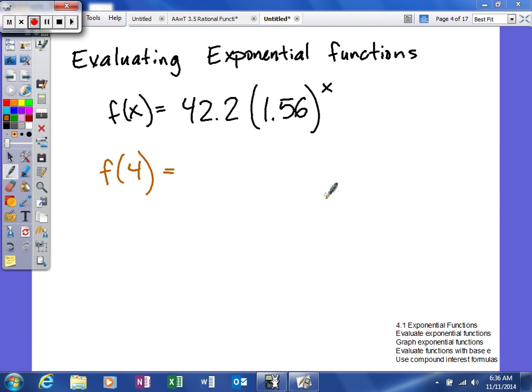But it always has to be positive. This example right here, this formula shows the average amount spent, f of x, in dollars at a shopping mall after x hours. And we're trying to figure out what is the average amount spent to the nearest dollar after 4 hours.